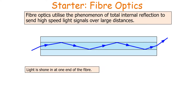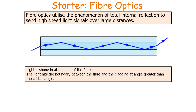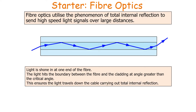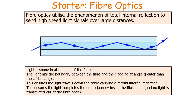Fibre optics work because light is shone in at one end of the fibre. The light then hits the boundary between the fibre and the cladding at an angle greater than the critical angle. This ensures that the light carries out total internal reflection and travels down the cable, so no light is transmitted out of the fibre optic.